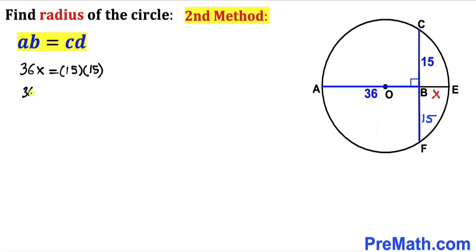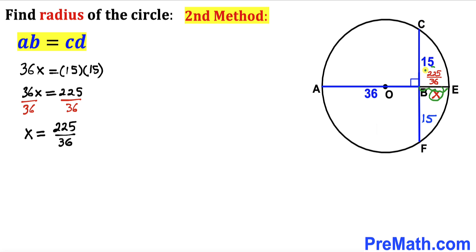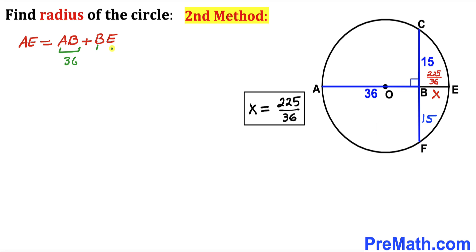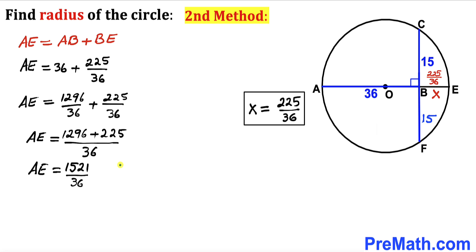So 36X = 225. Dividing both sides by 36, X equals 225/36. Therefore segment BE equals 225/36. The whole length AE equals AB plus BE, which is 36 plus 225/36. Adding these fractions gives AE = 1521/36.